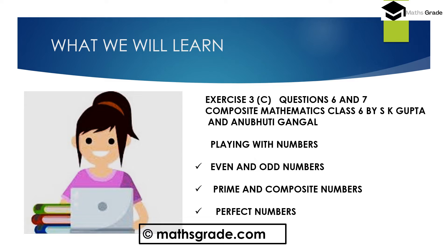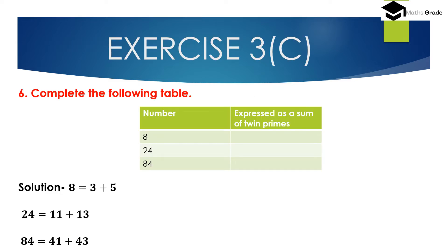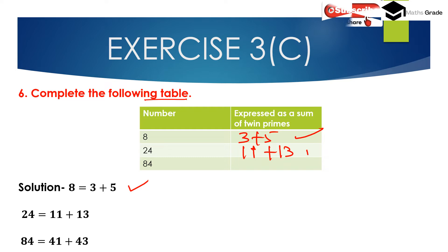Question number 6: Complete the following table — express the number as the sum of twin primes. For 8: we can write 8 as the sum of two prime numbers, 3 and 5, so 8 = 3 + 5. Both 3 and 5 are prime numbers. For 24: 24 is the sum of 11 and 13. Both 11 and 13 are prime numbers.